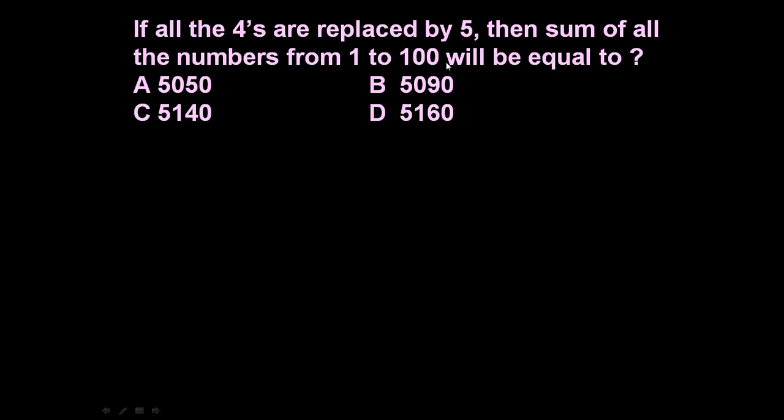This means 1 to 100, whatever numbers are there, in those numbers all the 4s are replaced by 5. So what will be the sum? To answer such question, first let us determine sum of numbers from 1 to 100 when 4 is at its own place. 4 is not replaced by 5. The formula to determine such sum is given by n into n plus 1 divided by 2.